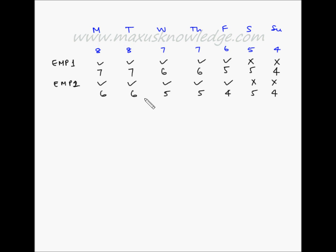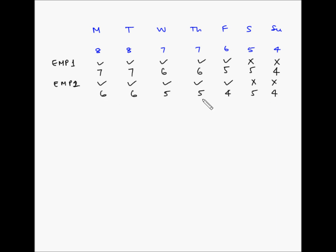Now let's find the two consecutive days with the lowest net requirements. Calculating: 6+6=12, 6+5=11, 5+5=10, 5+4=9, 4+5=9, 5+4=9, and 4+6=10. We have three pairs with the same net requirement of 9: Thursday-Friday, Friday-Saturday, and Saturday-Sunday. Since no day preference has been given in this example, we choose at random — let's again choose Saturday and Sunday.